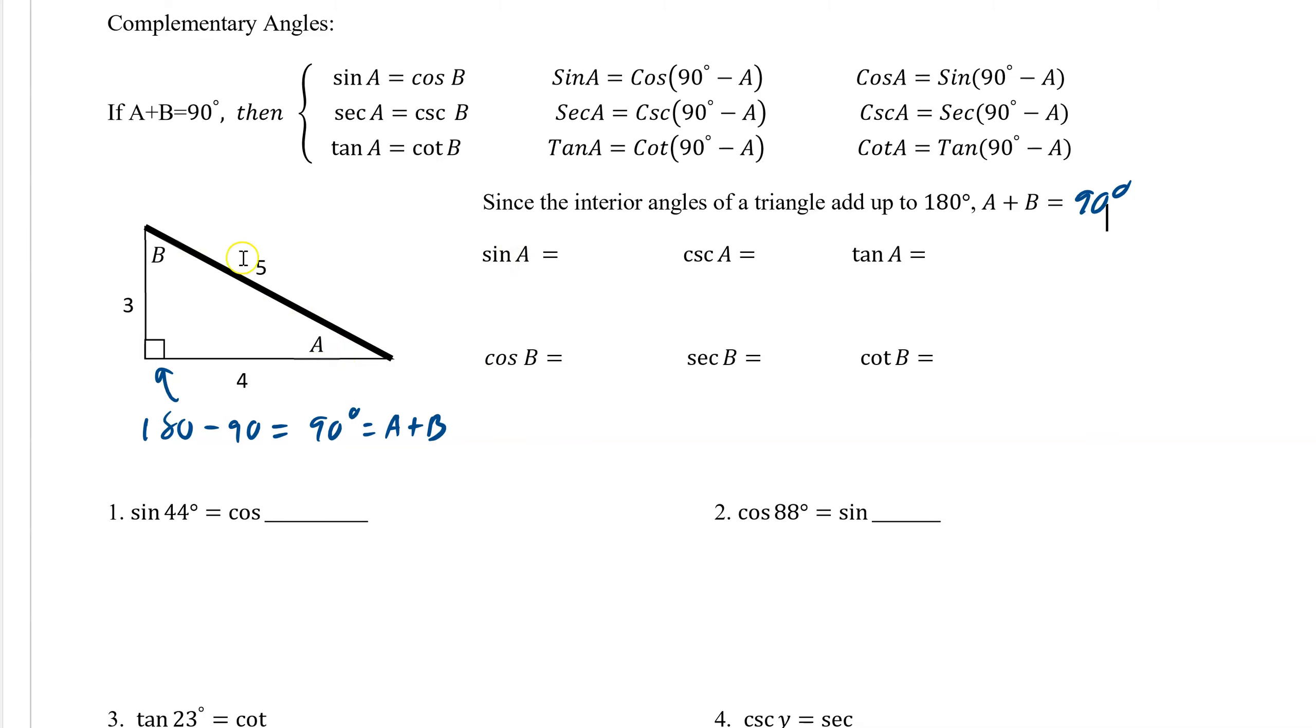So sine of a, that's 3 over 5. And let's look at cosine of b. So b is here, right? Cosine of b would be 3 over 5. It's magic. They are equal.